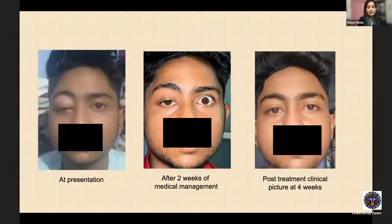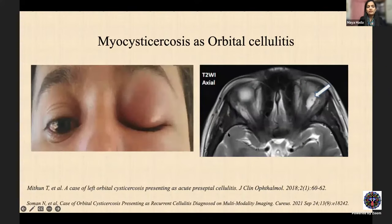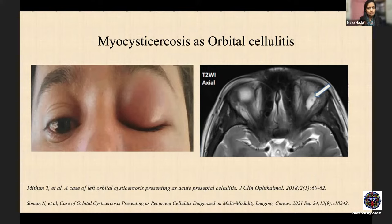The patient was started on oral albendazole and steroid. After two weeks edema resolved with improvement in ptosis, and by four weeks ptosis was near-totally resolved. Myocysticercosis can also present as orbital cellulitis — always have a high index of suspicion. To differentiate from orbital cellulitis: proptosis and chemosis are not as pronounced; movement limitation is in a particular gaze rather than global; and imaging is diagnostic.